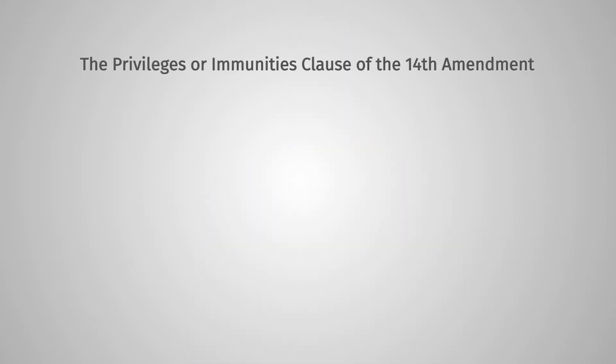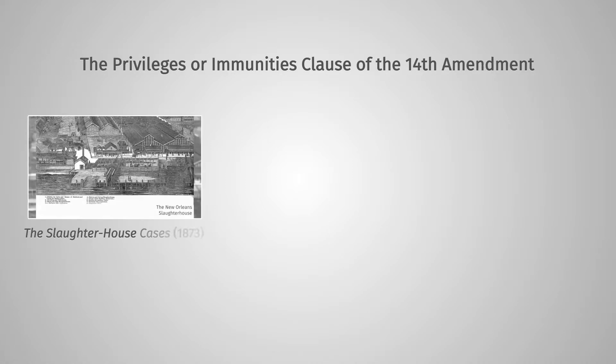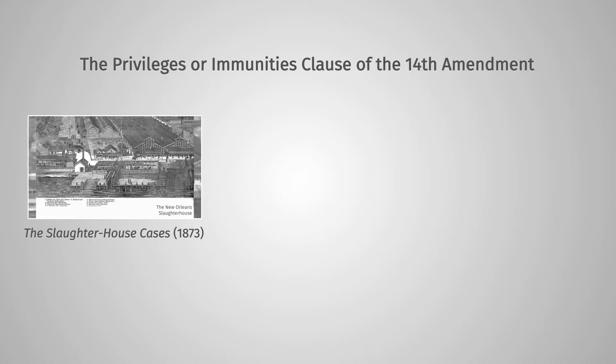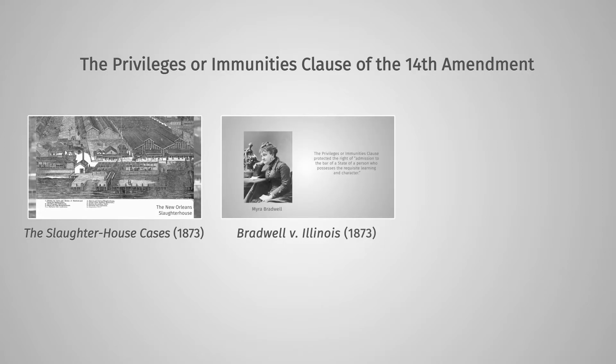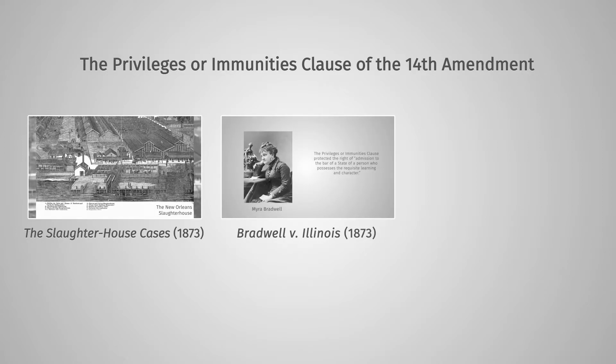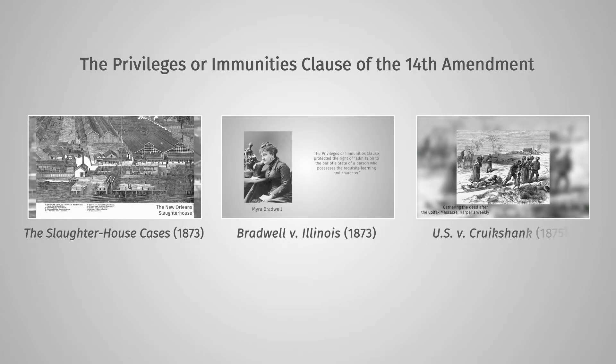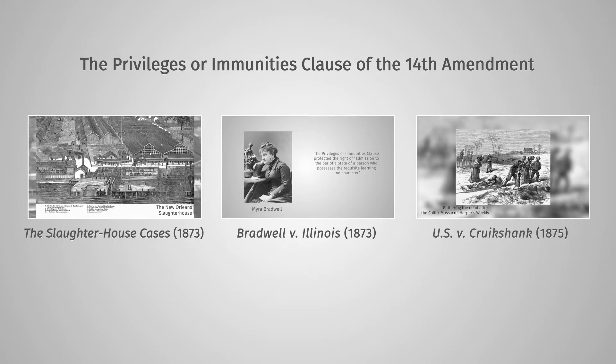Next, we study the Supreme Court's early decisions, which greatly narrowed the interpretation of the Privileges or Immunities Clause of the 14th Amendment: The Slaughterhouse Cases, 1873; Bradwell v. Illinois, 1873; and U.S. v. Cruikshank, 1875.